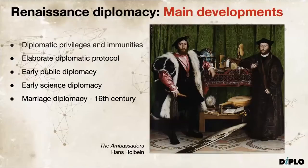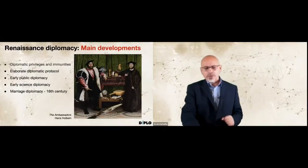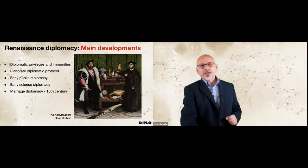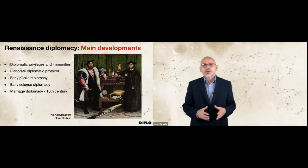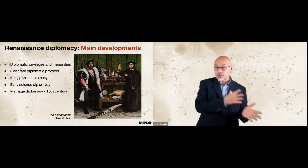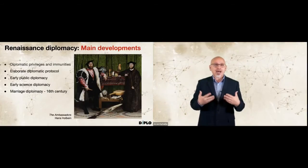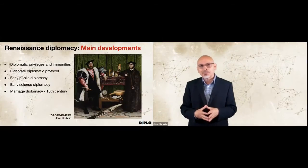Science diplomacy is a very popular topic today, but it could be traced back, especially involving countries that were expanding their colonial exploration, such as Spain and Portugal. For example, the French ambassador to Portugal, Jean Nicot, sent lemon and banana trees as well as indigo imported from Asia back to Paris. He was also first to bring tobacco to Paris, and it was after him that nicotine got its name. This diplomatic trivia shows the importance of diplomats as the first science diplomats conveying new discoveries back to their capital.